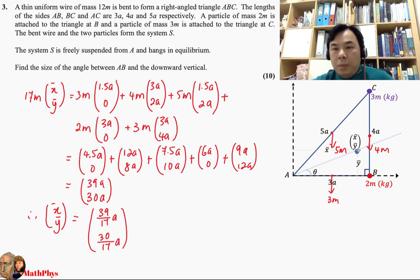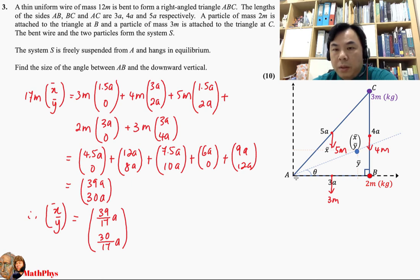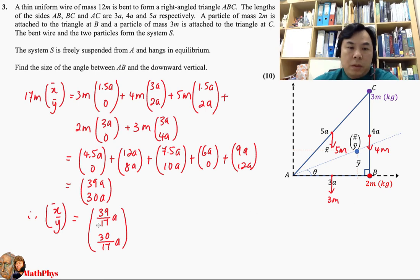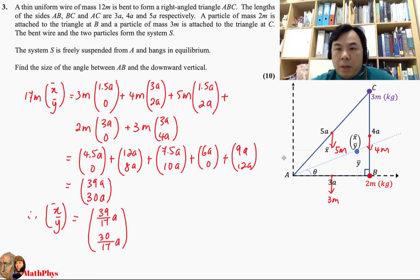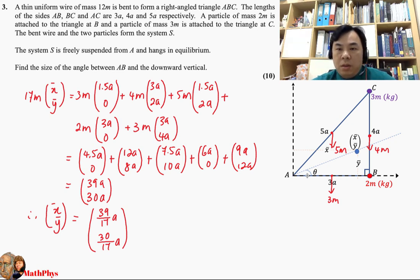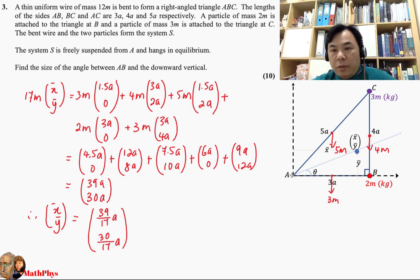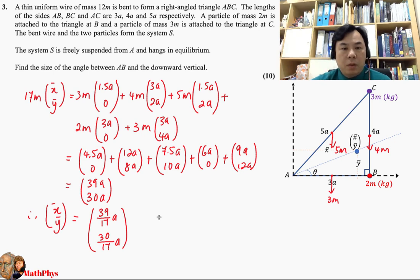That is the center of mass for system S — a thin wire of mass 12M bent into a right-angled triangle, with two extra particles of 3M and 2M attached. Bear in mind, do not treat this as a triangular lamina, because this is not a filled plane ABC; rather it is a frame consisting of thin wires AB, BC, and AC.